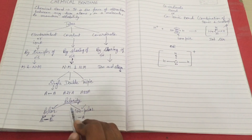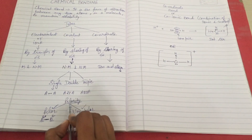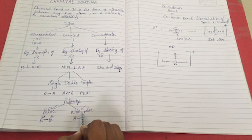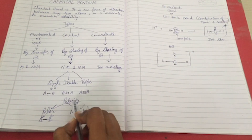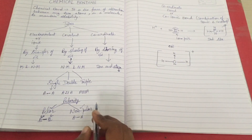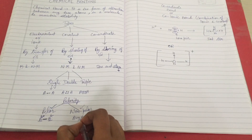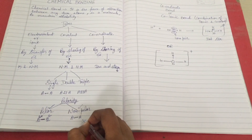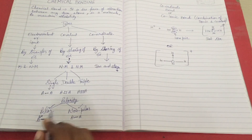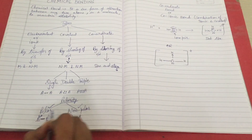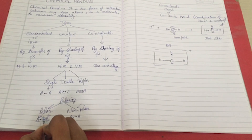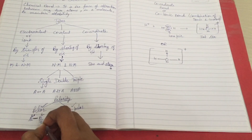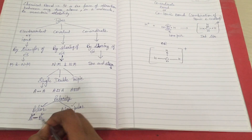Covalent bonds are also divided on the basis of polarity — first is polar and second is non-polar covalent compound. In a non-polar covalent compound, electrons are equally distributed between the atoms because their electronegativity is almost the same. In a polar covalent compound, the electrons are not distributed equally due to the electronegativity difference.